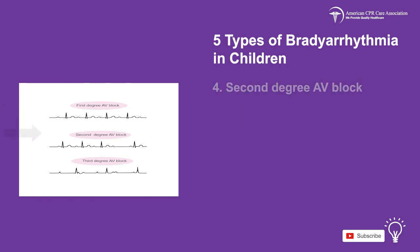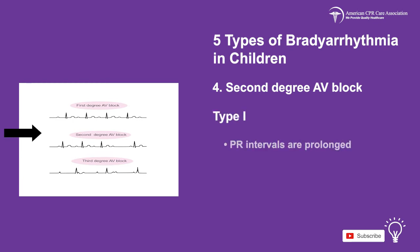The next type is called second-degree AV block, which is divided into type 1 or Mobitz 1 and type 2 or Mobitz 2. In type 1, the PR intervals are prolonged, the RR intervals are shortened, and finally one beat drops. Dizziness may be a symptom, but symptoms are usually not observed.